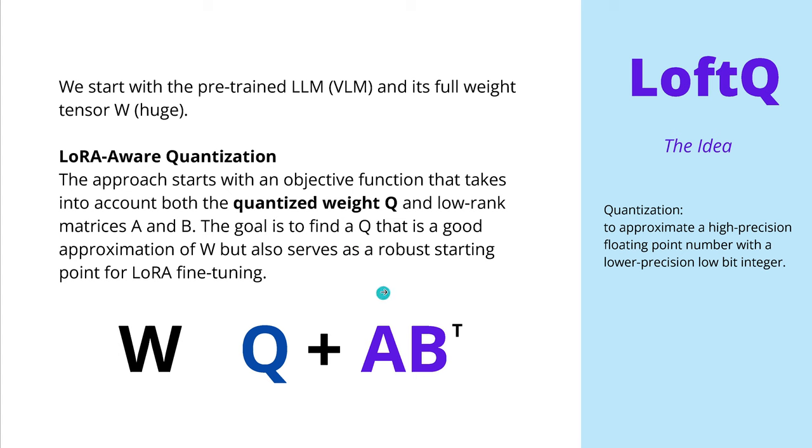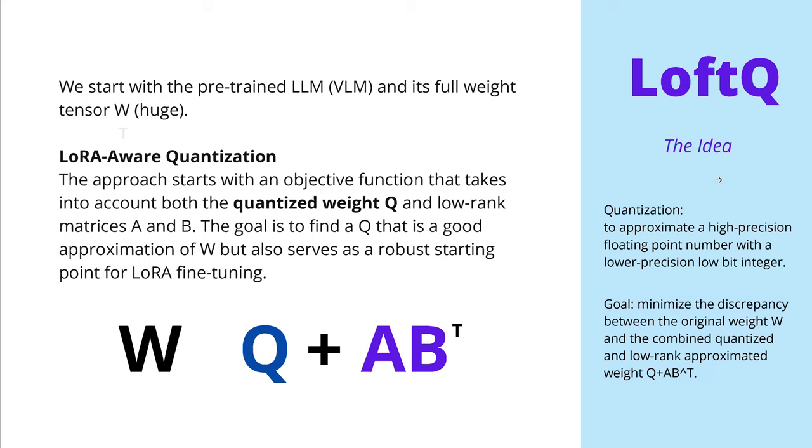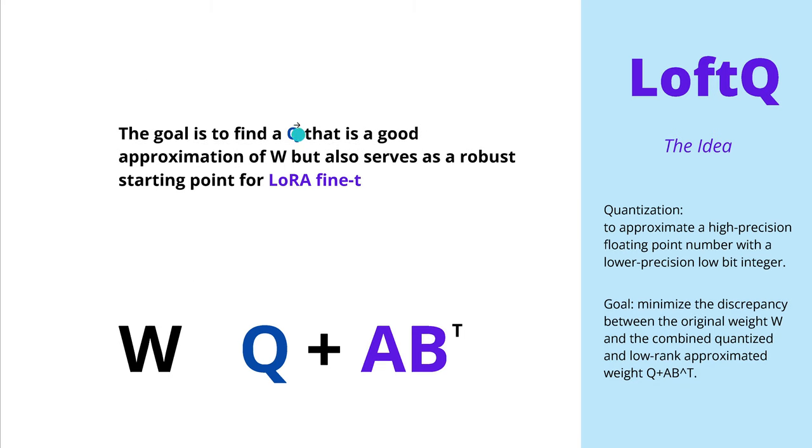And you know the second term here is of course here our LoRa term, T for transpose matrix. Great. Now the goal as you see here is to minimize the discrepancy between our original weight tensor or huge weight tensor W and the combined quantized and low rank approximated weight tensor. This is now our optimization problem. So the goal is to find a Q that is a good approximation of W but also serves as a robust initial condition here for our fine-tuning exercise on LoRa.